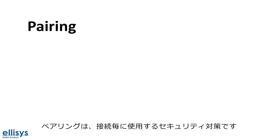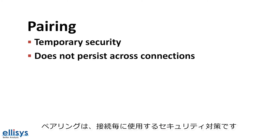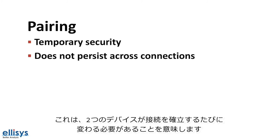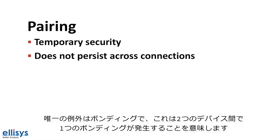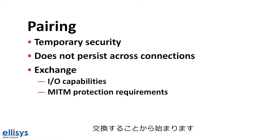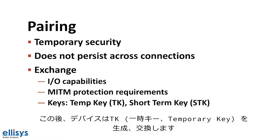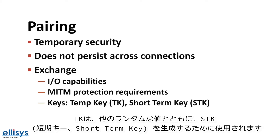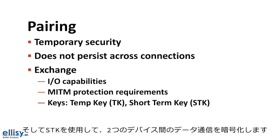To better understand how security works in BLE, there are two main concepts: pairing and bonding. Pairing is a temporary security measure that does not persist across connections, meaning it must be initiated and established each time the two devices reconnect — except when bonding has occurred. Pairing starts with exchanging the IO capabilities of each device as well as the MITM protection requirements. The devices then exchange or generate a temporary key, which along with other random values is used to generate the Short-Term Key, or STK, which encrypts the data communication between the two devices.